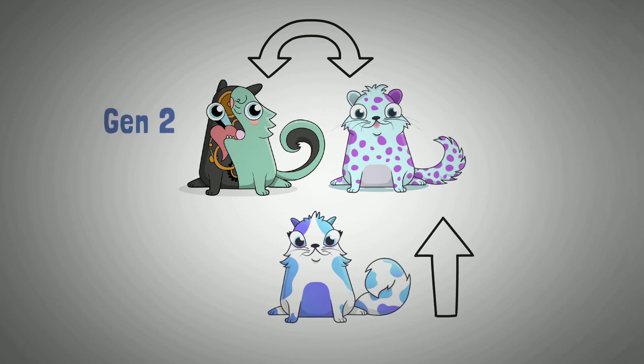For example, if you breed Gen 2 and Gen 3 kitties, you get Gen 4 kitties, or when you breed two Gen 1s, you get a Gen 2.